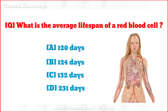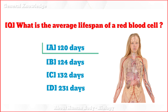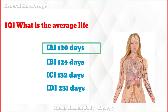What is the average lifespan of a red blood cell? The correct answer is option A: 120 days.